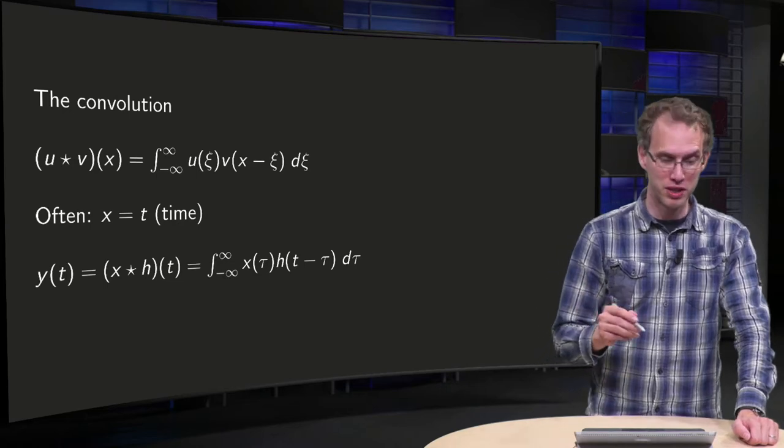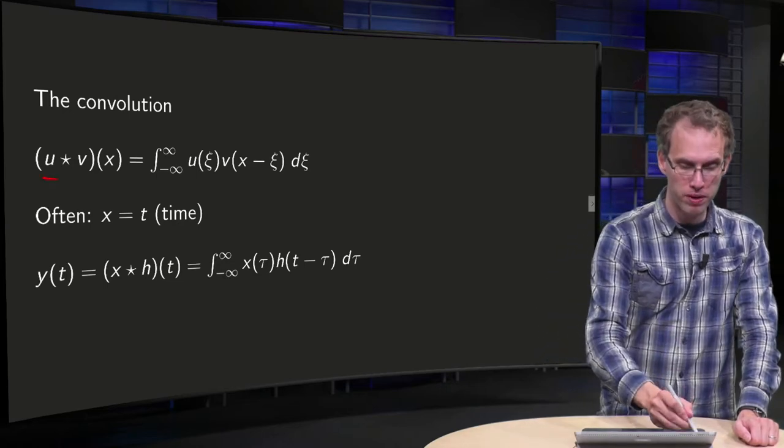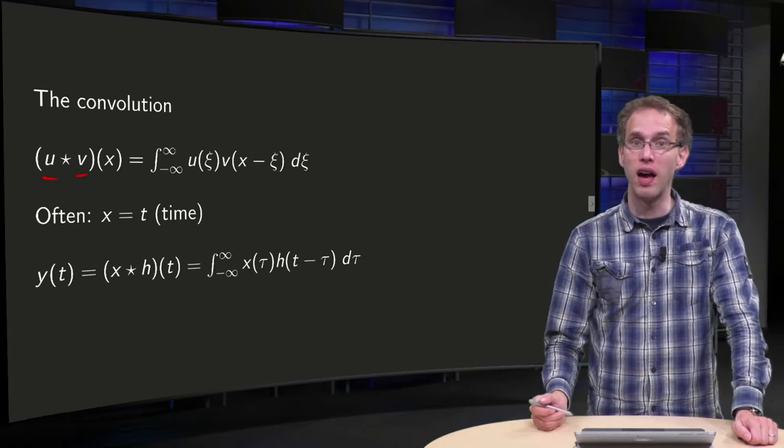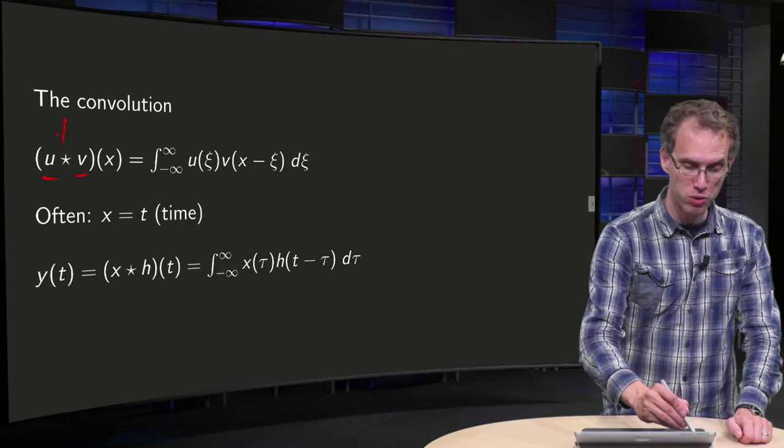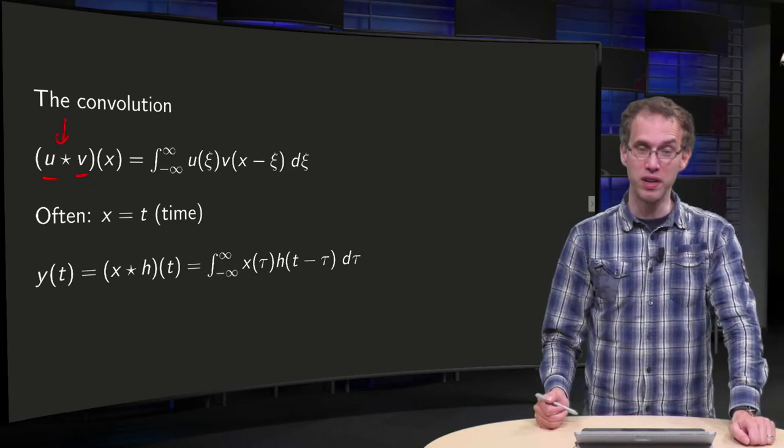So what is the definition? Suppose we have two functions, u and v. And we can compute the convolution denoted by a star, u star v, that yields a function of x.